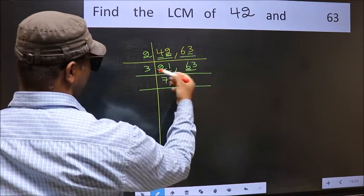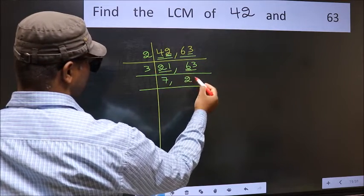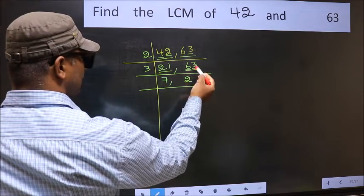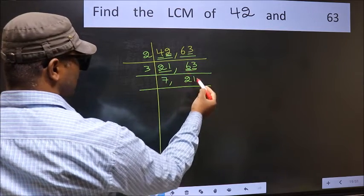First number 6. When do we get 6 in 3 table? 3 times 2 is 6. The other number 3. When do we get 3 in 3 table? 3 times 1 is 3.